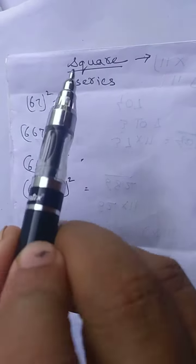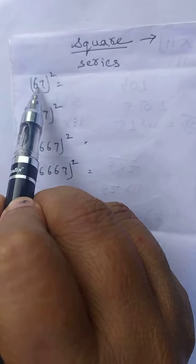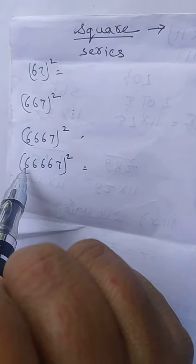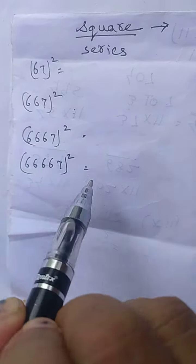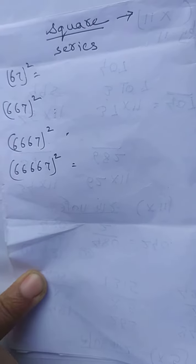Hello children, now let us study squares in a series. For example, 67 square, 667 square, 6667 square, 66667 square - such questions are always asked in competitive exams and Olympiad exams.